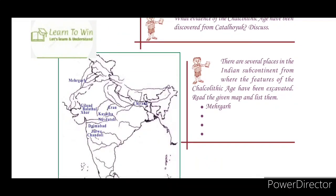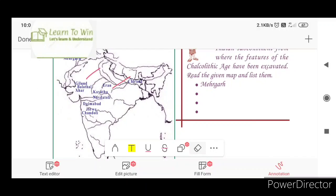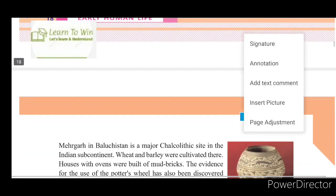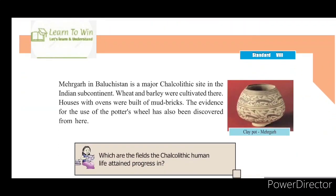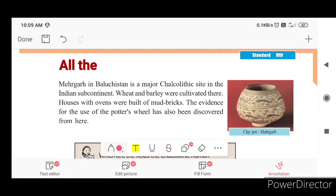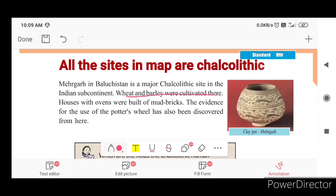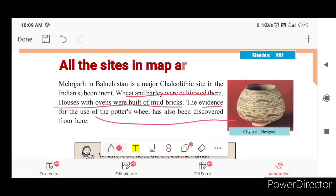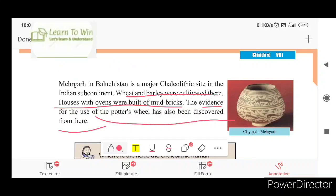There were several places in the Indian subcontinent from where features of the Chalcolithic age have been excavated. Mehergath in Balochistan is a major Chalcolithic site in the Indian subcontinent. Wheat and barley were cultivated here. Houses with ovens were built of mud bricks. Evidence for the use of potter's wheel has also been discovered from here.